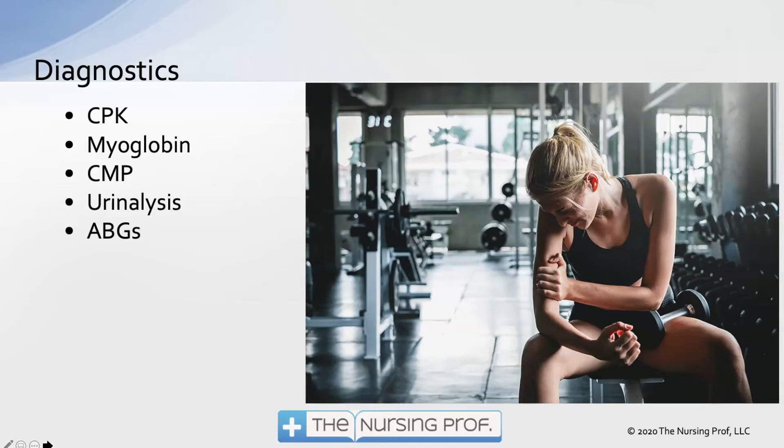On urinalysis, we expect to see that reddish-brown urine, and we may also see myoglobin and blood in the urine. Blood gases may help us identify a metabolic acidosis.